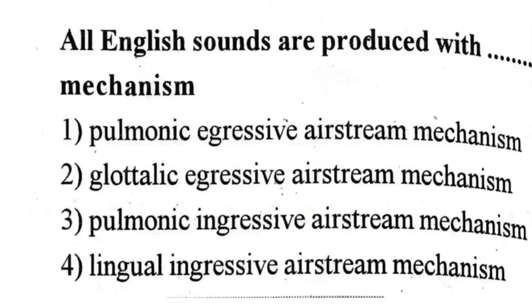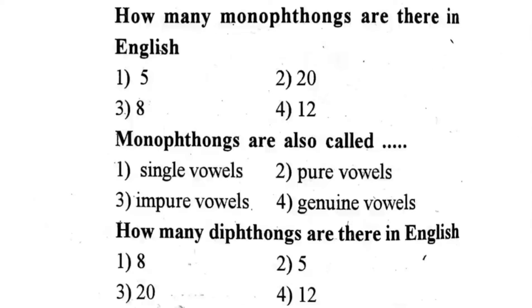Next question: How many monophthongs are there in English? First one, five. Second one, twenty. Third one, eight. Fourth one, twelve. The correct answer is second one — twenty monophthongs.